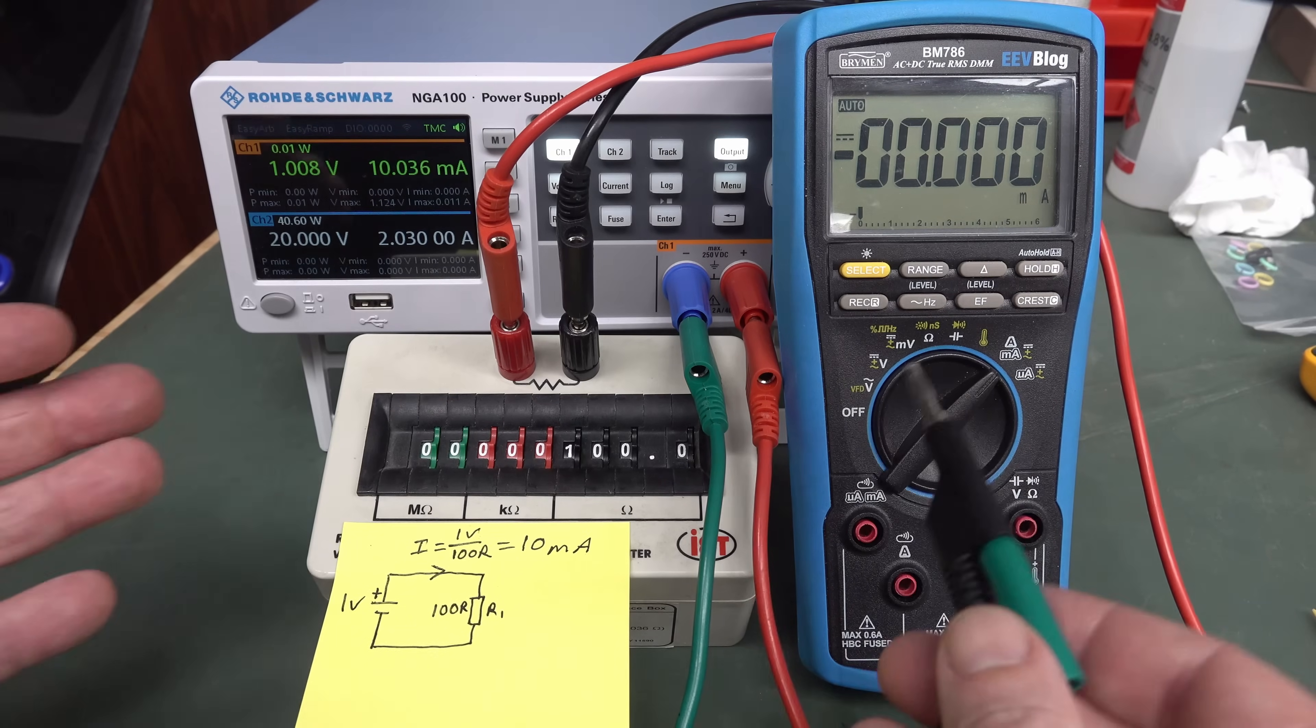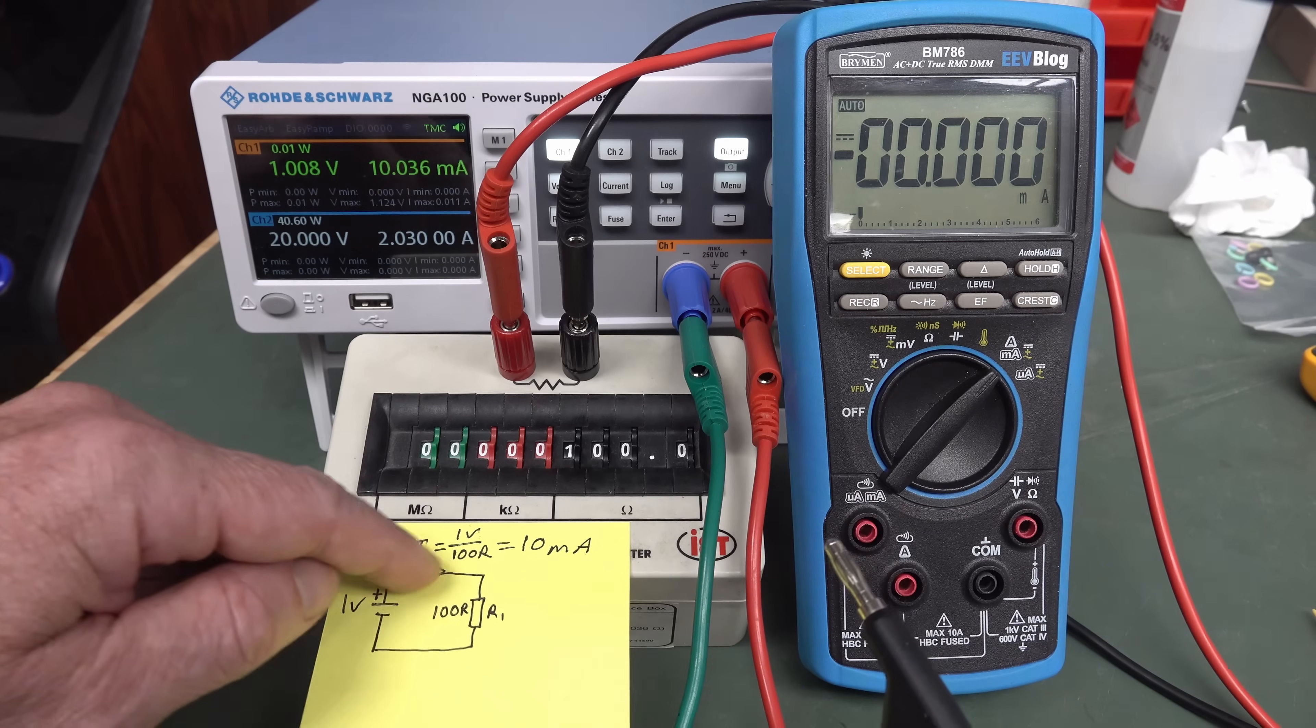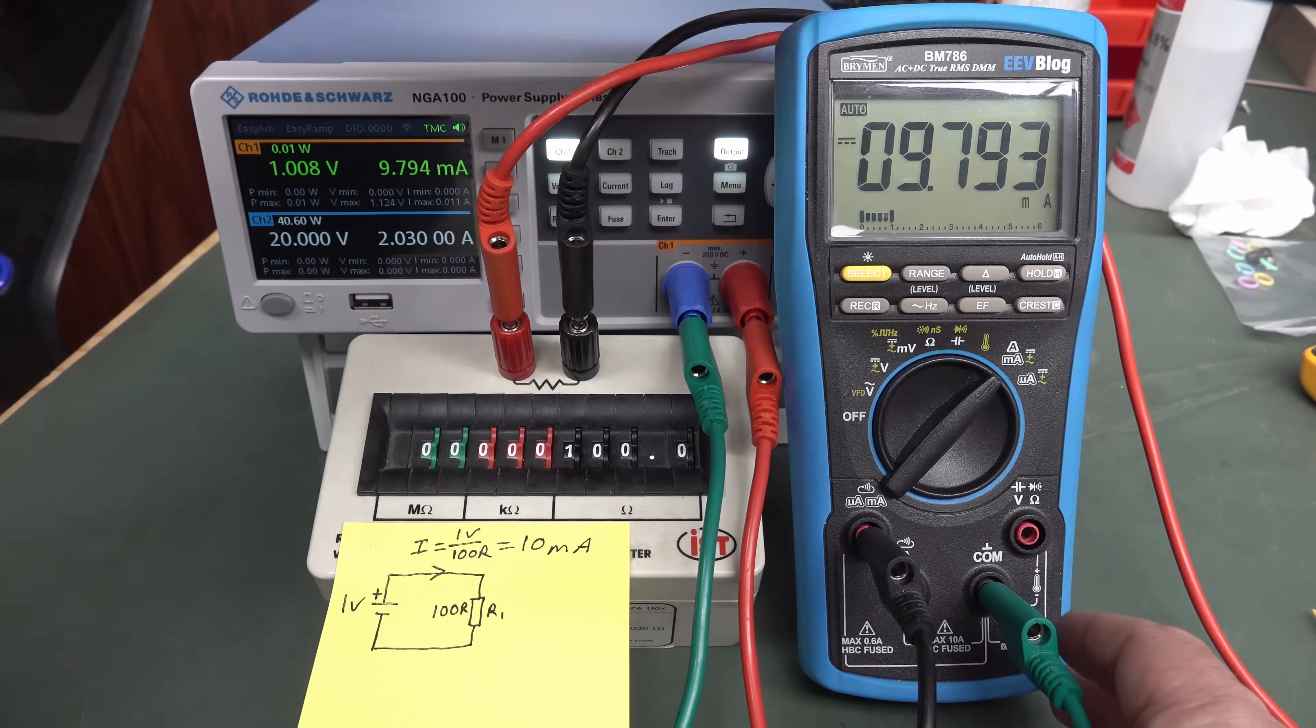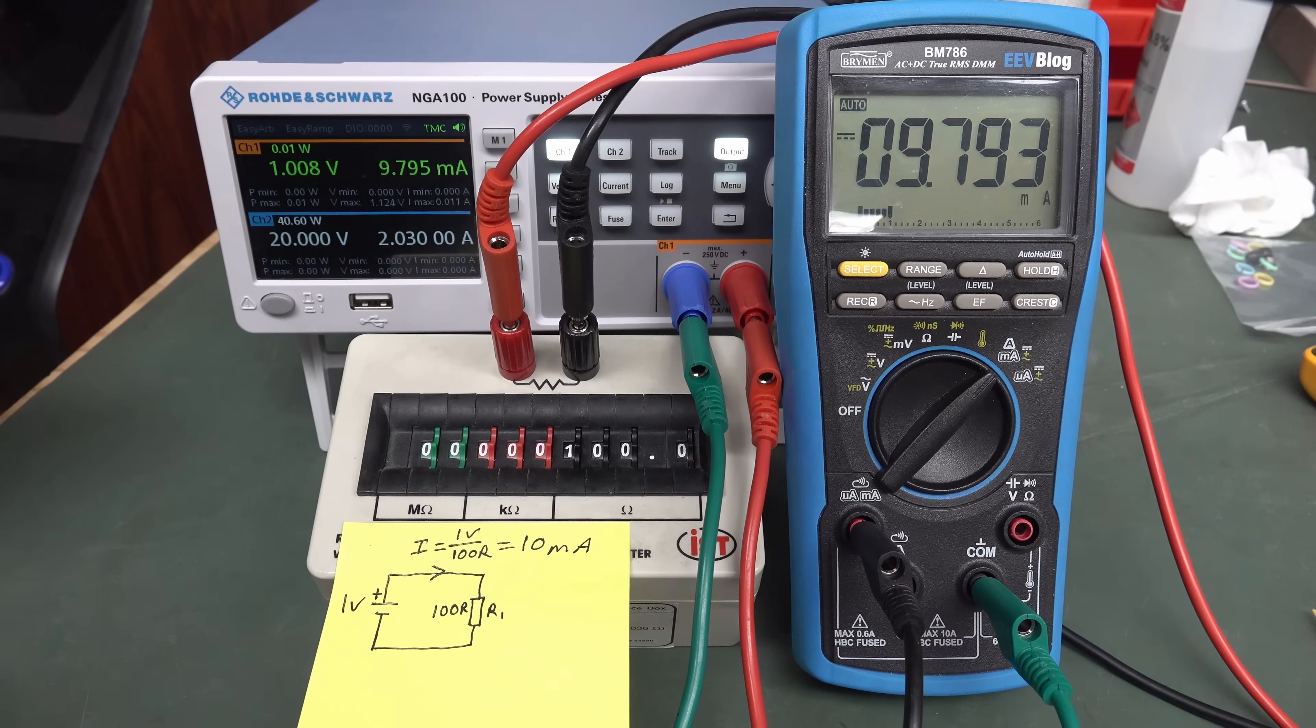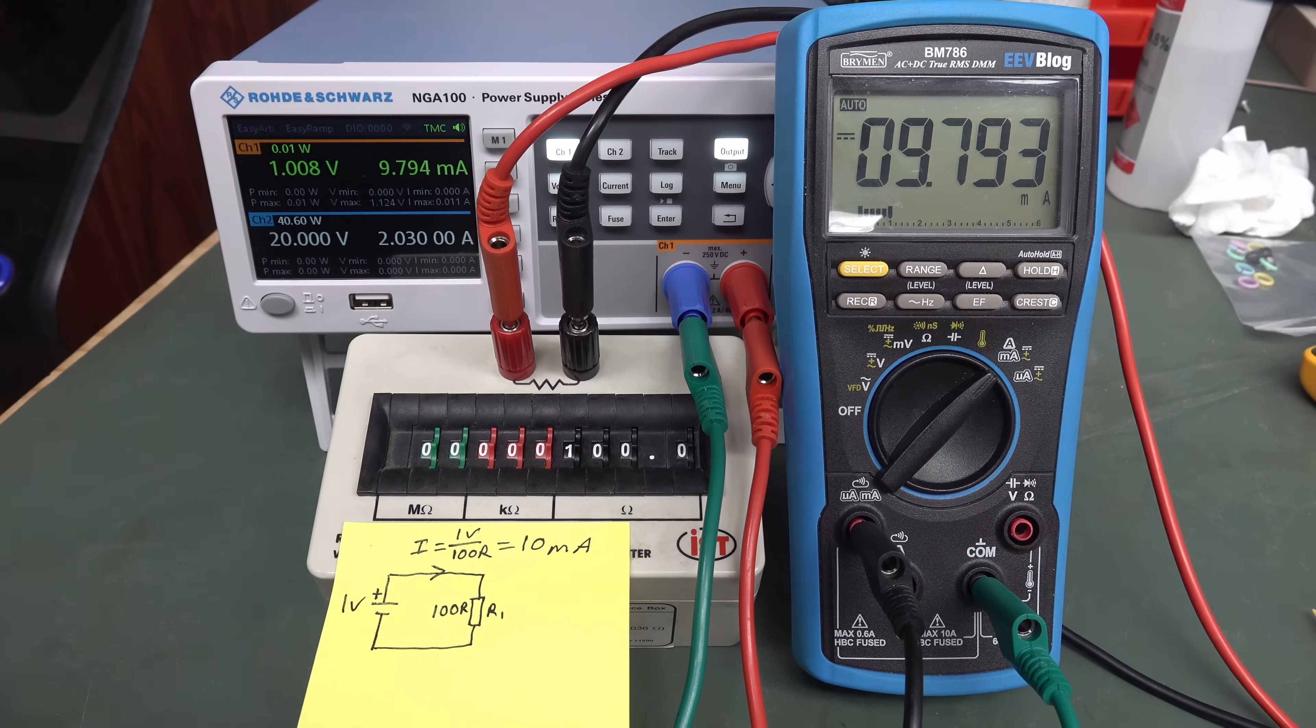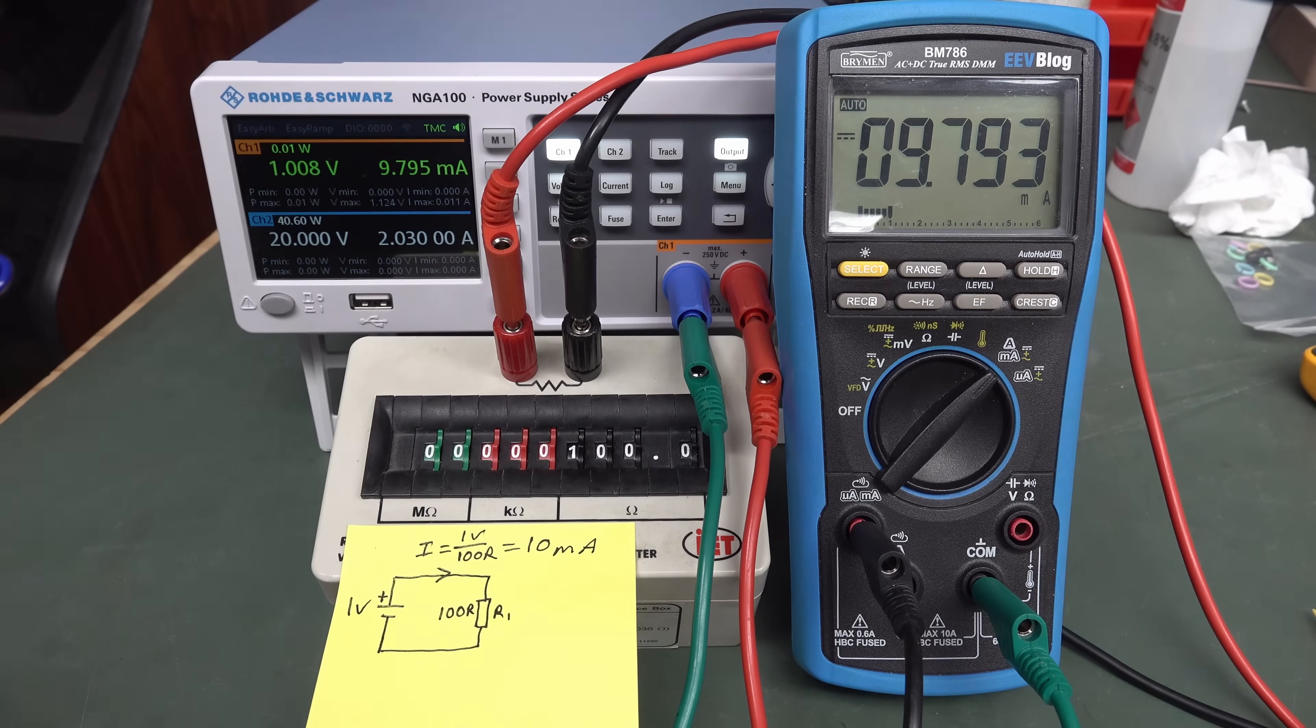But watch what happens if I break my circuit and insert my current meter in series, because that's what you have to do with a multimeter measuring current. You have to put it in series, either on the top here or the bottom here, and it makes no difference. So let's disconnect our circuit and plug it in and see what happens. 9.8 milliamps. What's going on? Is there something wrong with this meter? No. In fact, this is an excellent and quite accurate meter. Even the power supply over here is now reading exactly the same. It's dropped from 10 milliamps to 9.8 milliamps.